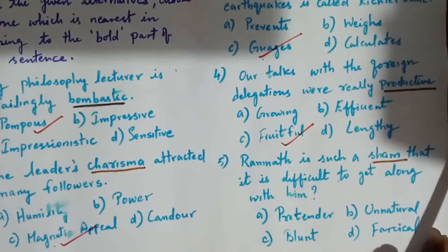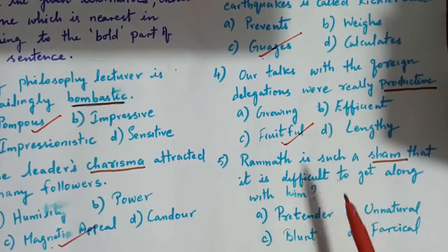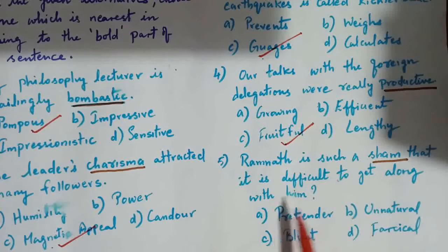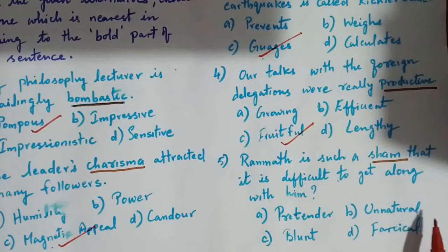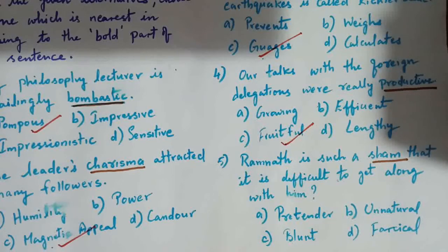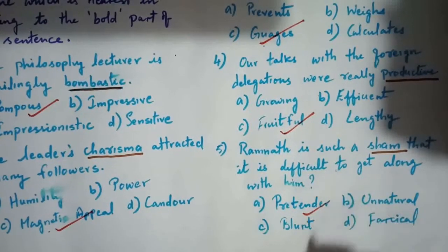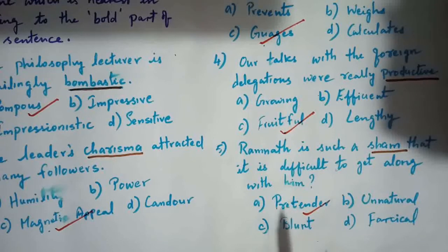Next question is: Ramnad is such a sham that it is difficult to get along with him. The options are: pretender, unnatural, blunt, partial. And the answer is pretender. The alternative word for 'sham' is pretender.